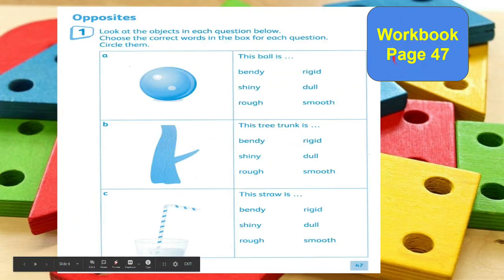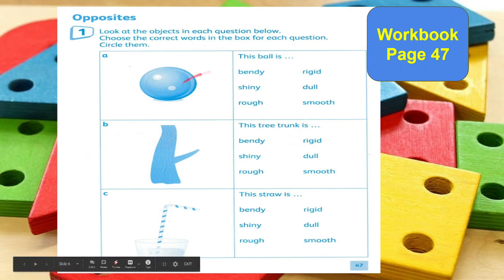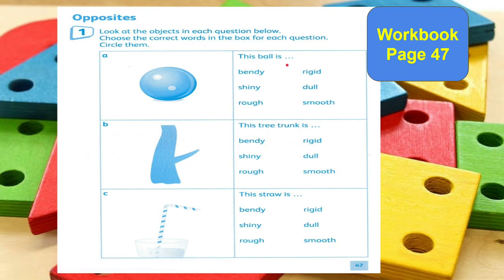In workbook page 47, Opposites. You have to look at the objects in each question and choose the correct words from the box, then circle them to describe the object. For letter A, this ball is — bendy, shiny, rough, rigid, dull, smooth. Choose the correct words for the ball.